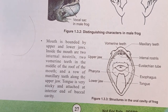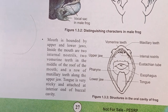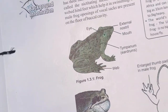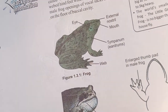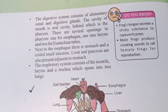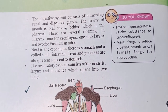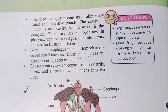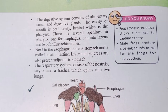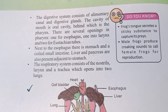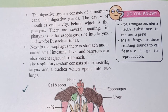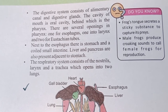The digestive system consists of the alimentary canal and digestive glands. The cavity of the mouth is the oral cavity, behind which is the pharynx. There are several openings in the pharynx.